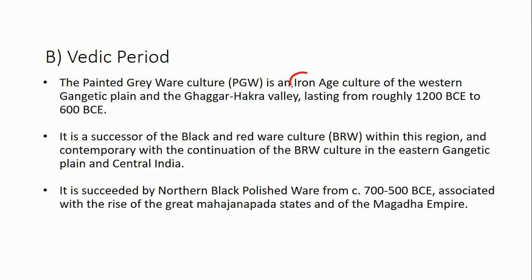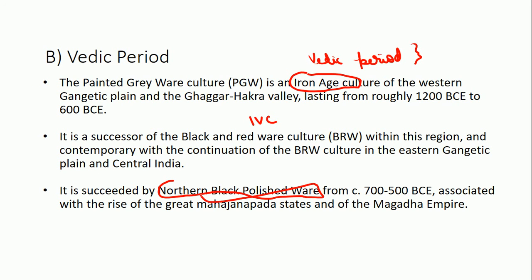Vedic period Iron Age ही है - Vedic period के time पर ही iron मिलना शुरू हुआ था। Painted graveyard pottery is a successor of black and red wear culture, जो Harappan IVC से associated है। It is succeeded by Northern Black Polished Ware (NBPW) from 700 to 500 BCE, associated with the rise of the great Mahajanapada states and the Magadha empire। तो इस MCQ से तीन चीज़ें पता चलीं: Black and red wear = IVC; NBPW = Mahajanapada period।